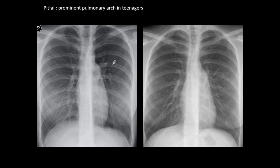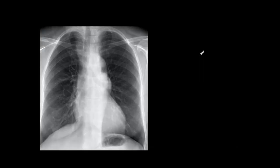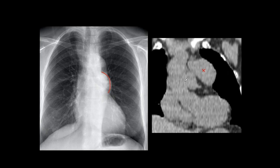Pitfall: it is normal to see a prominent pulmonary arch in teenagers. This is a common finding, probably due to thymic tissue, and should not be suspected as abnormal. For anyone under 25 with this finding, call it normal. The other pitfall is a tumor in front of or behind the pulmonary artery that may simulate pulmonary artery segment convexity. Here it was due to a thymoma — the patient was asymptomatic and it was proven to be a thymoma after the chest X-ray was taken.